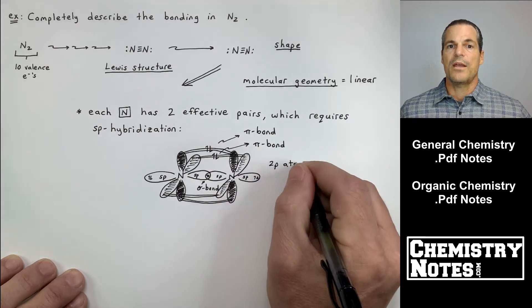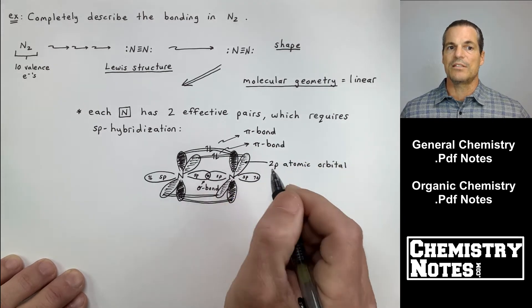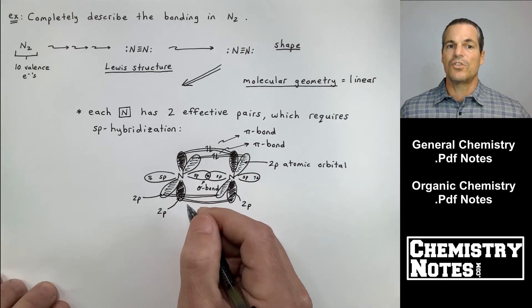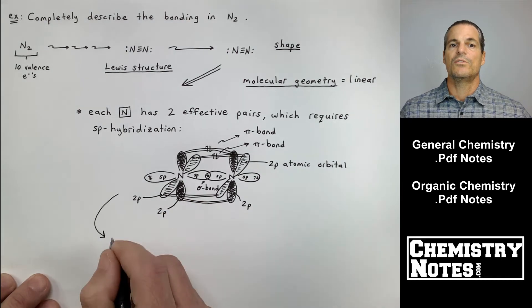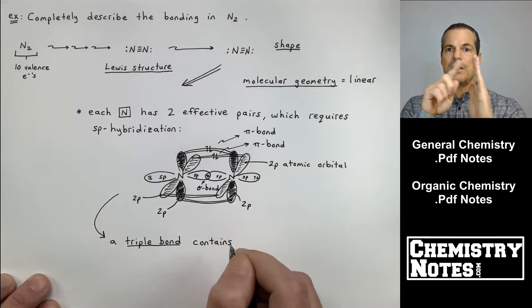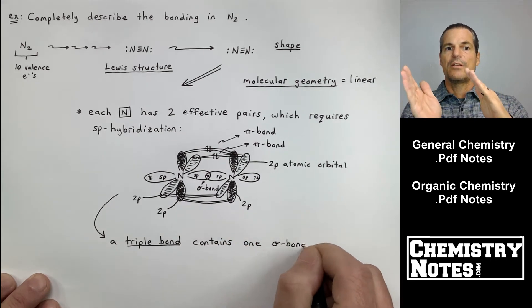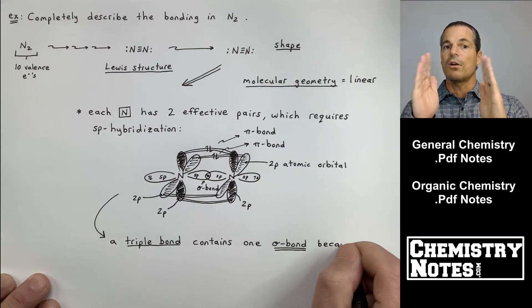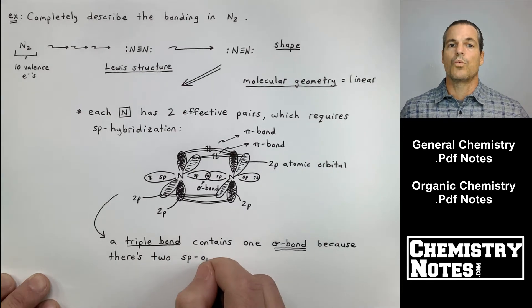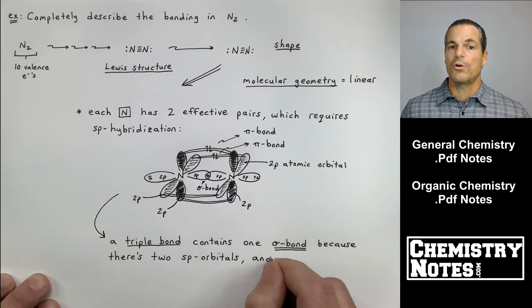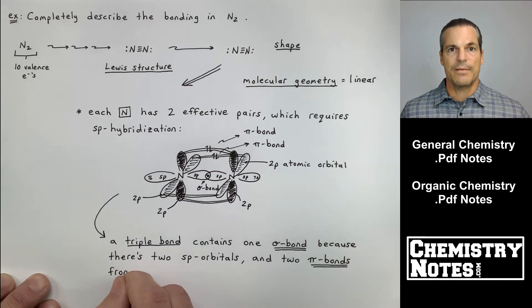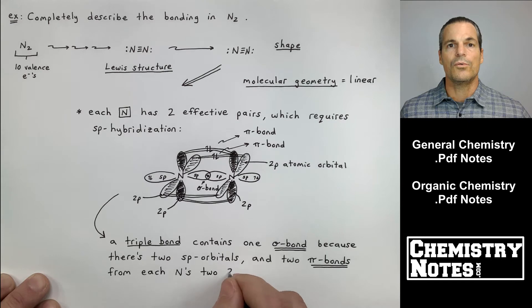Now if I have two effective pairs and I have SP hybridization, that means I have two P orbitals unused or left over. So each nitrogen has two 2P orbitals, and we can use each of those. You see, I've got the two darker dumbbells. The darker two Ps are making a pi bond. And then the two lighter shaded two P orbitals, which are perpendicular to the darker shaded P orbitals, those are making the triple bond. So a triple bond contains one sigma bond because there's two SP orbitals and two pi bonds. So a double bond is a sigma bond and a pi bond. A triple bond is a sigma bond and two pi bonds.